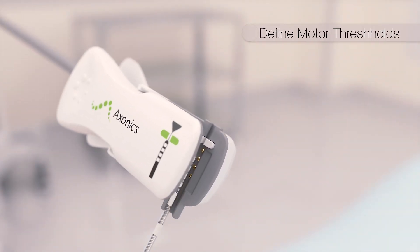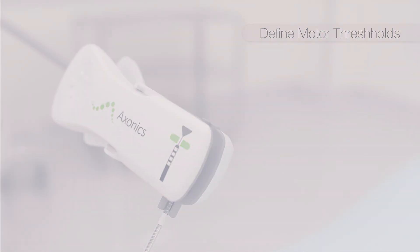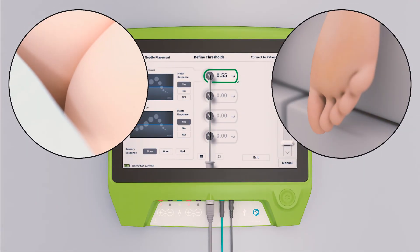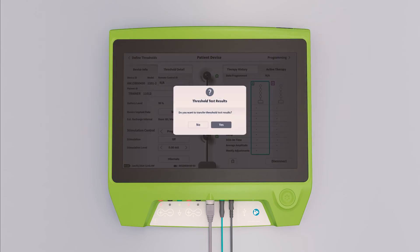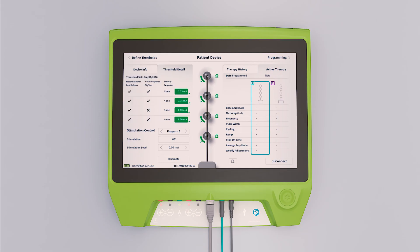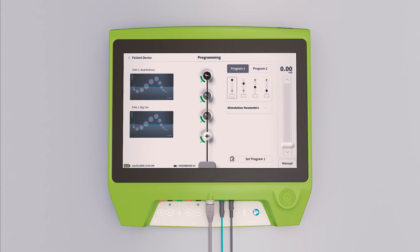Finally, each electrode is tested again. The goal is to define and record the motor response on all four electrodes at the lowest amplitude. This information will be saved to the stimulator and used to create a patient-specific programming algorithm.